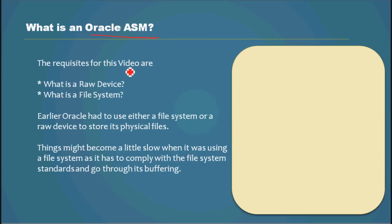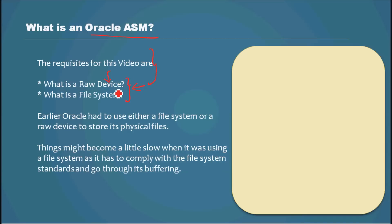The prerequisites for this video are the previous two videos: what is a raw device and what is a file system. We are having these lessons because in one of the previous videos we saw that Oracle files can be stored either in a raw device, in a file system, in Oracle ASM, or in a cluster file system. That's the reason we are having lessons on what is a raw device, what is a file system, and now what is Oracle ASM.